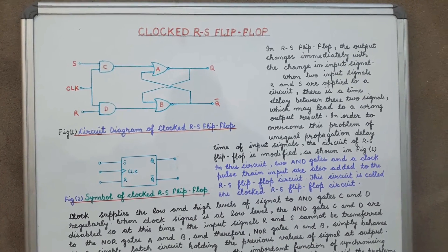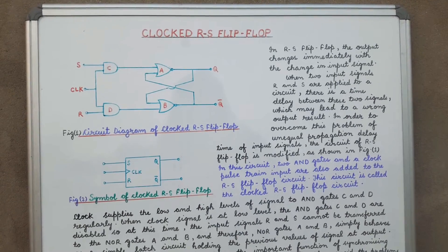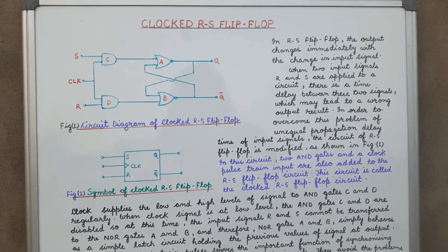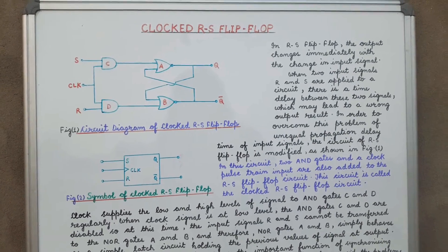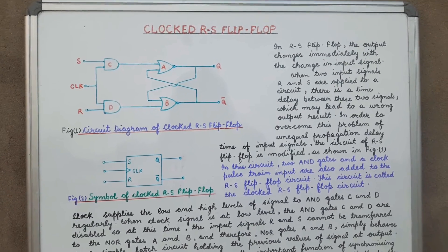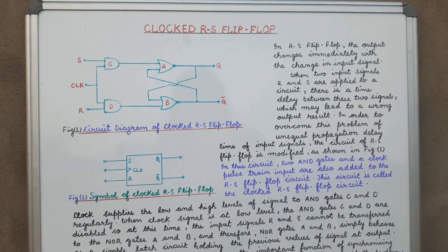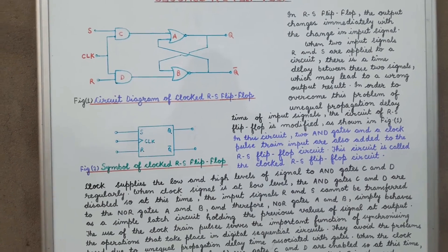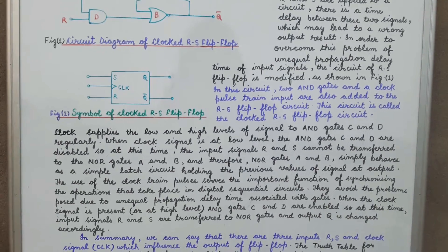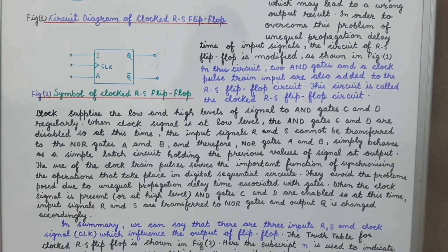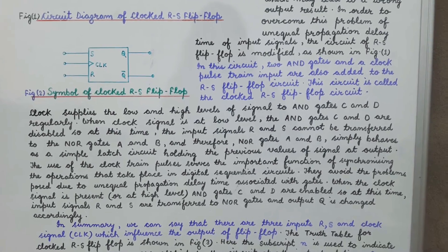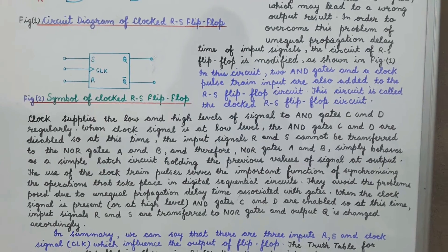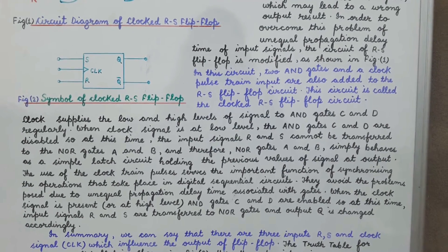The clock pulse value is a continuous pulse train of 0 and 1. So the clock pulse value alternates between 0 and 1, and it regularly supplies low and high level signals to AND gates C and D.